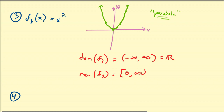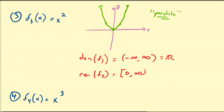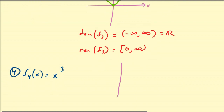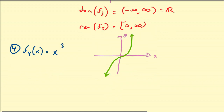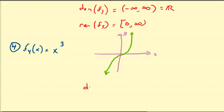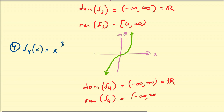Another function, f₄(x) — if we just increase the power to 3, then we get x cubed. Once you plot a bunch of numbers, you'll get a curve that looks like an S-shape. The domain of this function is going to be all real numbers, and the range of this function is also all real numbers.